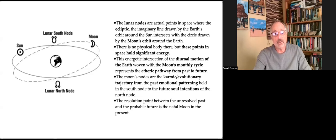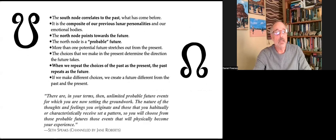The moon's nodes are the karmic evolutionary trajectory from the past emotional patterning held in the south node to the future soul intentions of the north node. The resolution point between the unresolved past and the probable future is the natal moon in the present. The south node correlates to the past, what has come before. It is the composite of our previous lunar personalities, our emotional bodies.